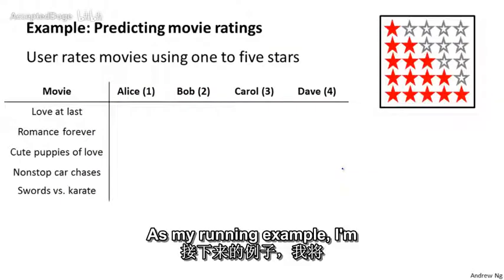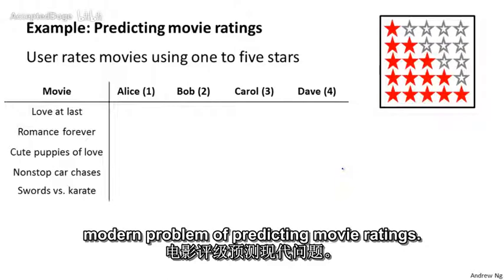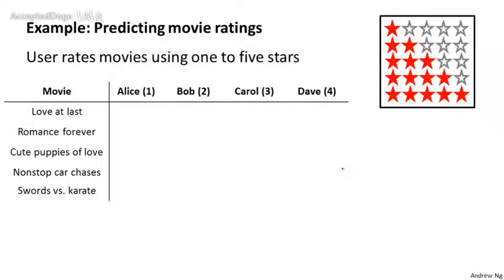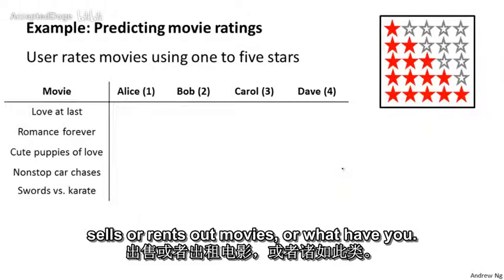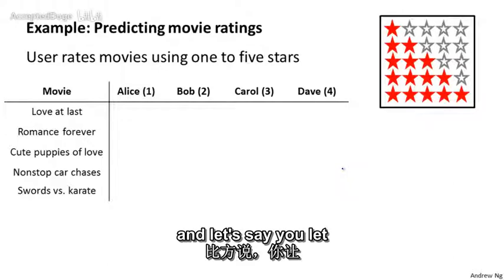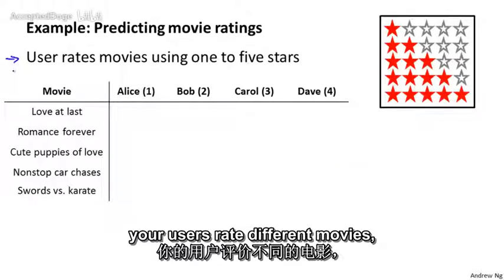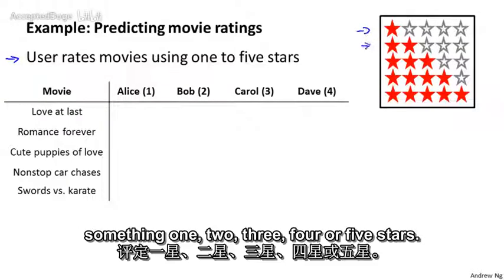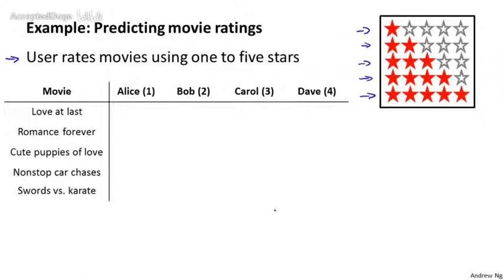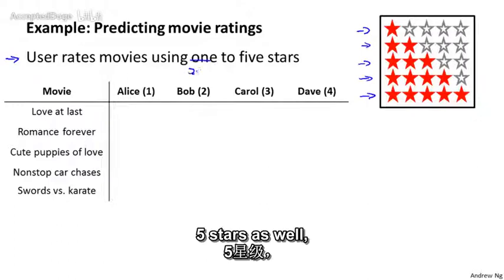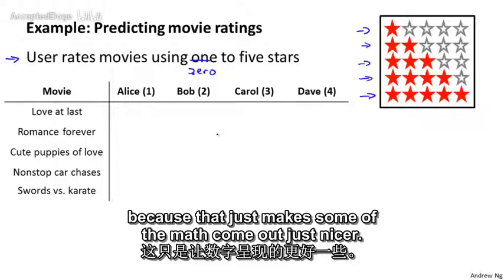As my running example, I'm going to use the problem of predicting movie ratings. Imagine that you're a website or a company that sells or rents movies — Amazon, Netflix, and iTunes are all examples of companies that do this. Let's say you let your users rate different movies using a one to five star rating. I'm going to allow zero to five stars as well, because that makes some of the math come out nicer, although most of these websites use a one to five star scale.